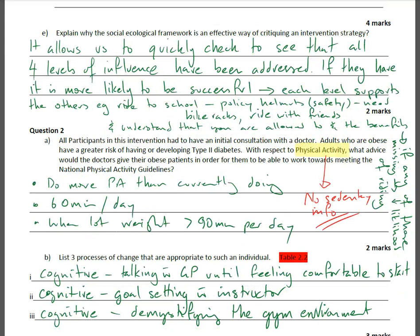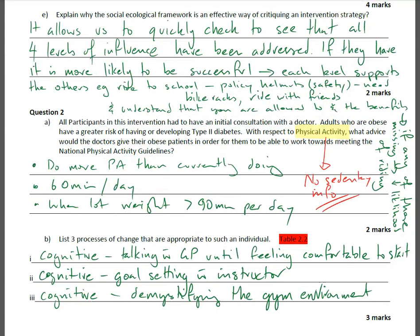Explain why the social ecological framework is an effective way to critique an intervention strategy. It allows us to quickly check that all four levels of influence have been addressed. If they have, then it is more likely to be successful, because each level supports the other — with an example there of a ride to school policy.